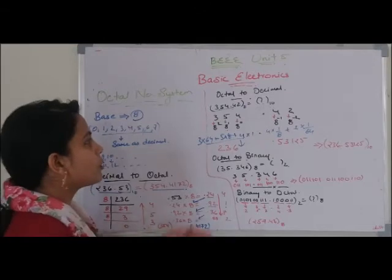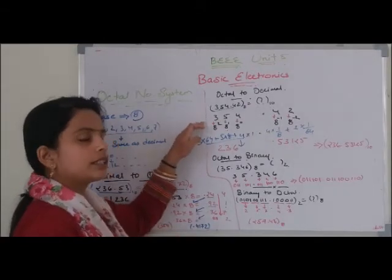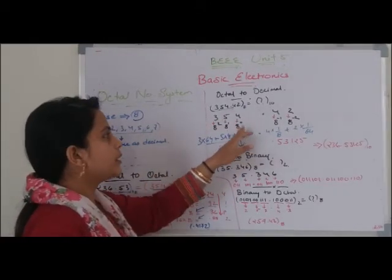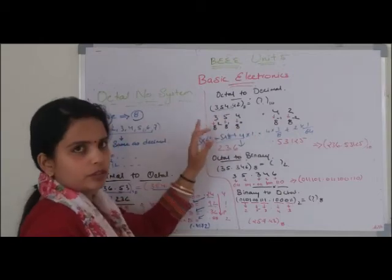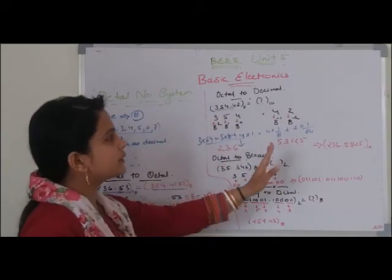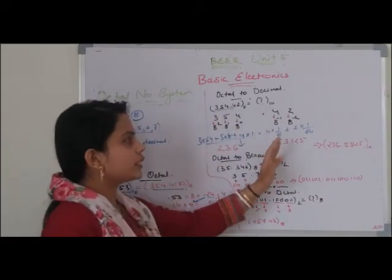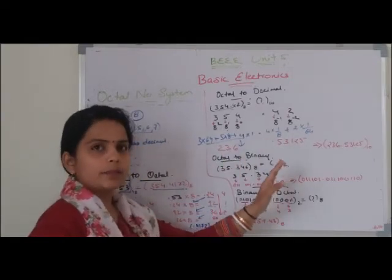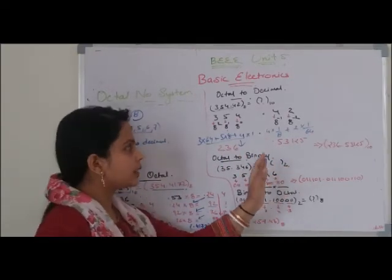जो whole number है उसको हम right से left direction में जाएंगे — 8 to the power 0, 8 to the power 1, 8 to the power 2 — और fraction number को solve करने के लिए हम इसका opposite करेंगे, जैसे हमने binary to decimal conversion में भी किया था।